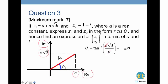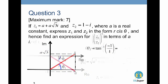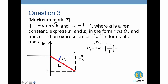After finding the argument, we find the modulus — the magnitude of the red line — using Pythagoras' theorem. The modulus of z1 is √(a² + (a√3)²) = √(a² + 3a²) = √(4a²) = 2a. We can now express z1 in modulus-argument form as 2a·cis(π/3).